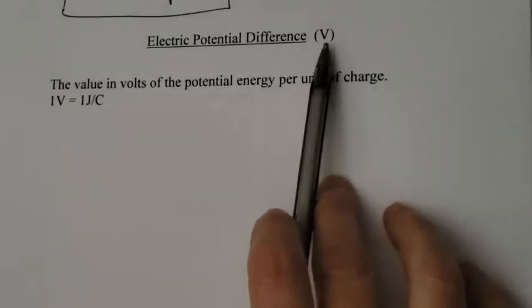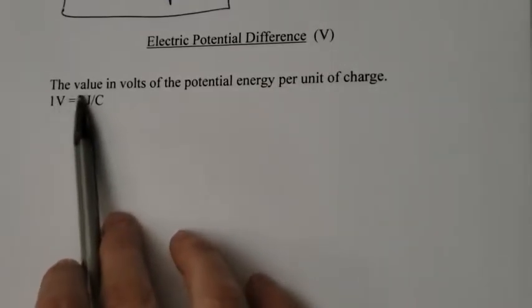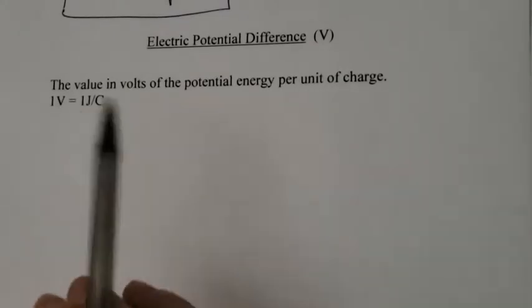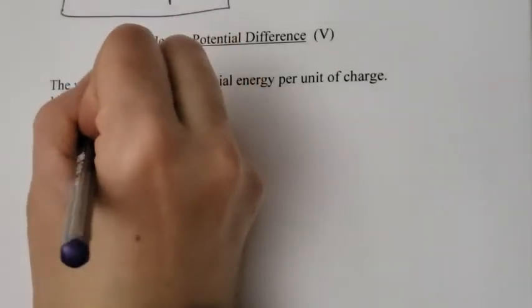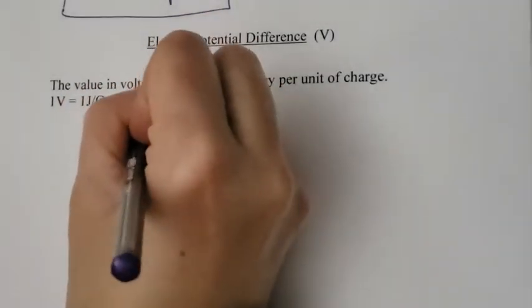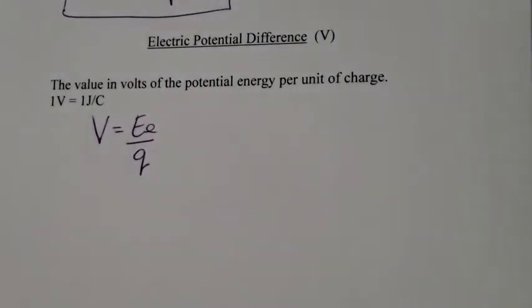Electrical potential difference or voltage, we use the symbol V for voltage. The value in volts of the potential energy per unit charge. So voltage is how much electrical energy we have for every unit of charge.